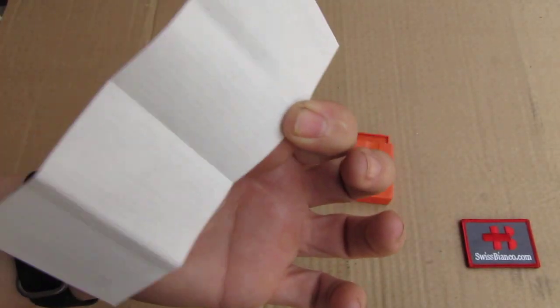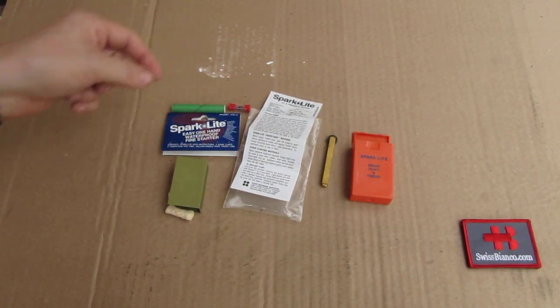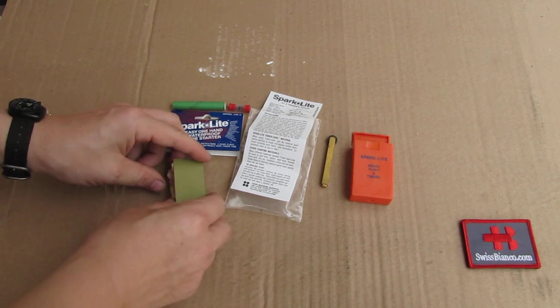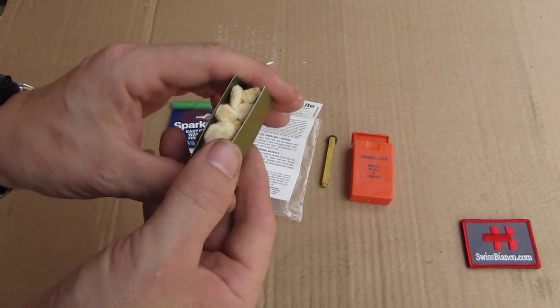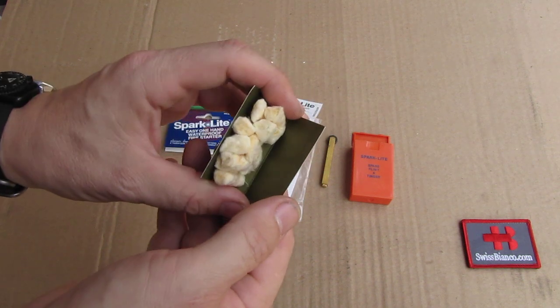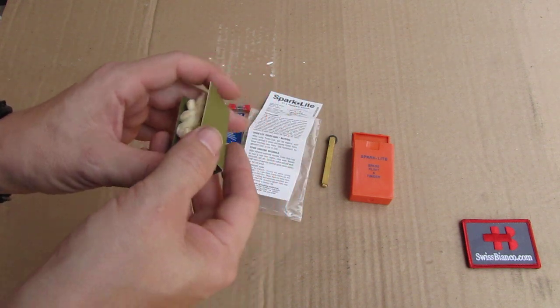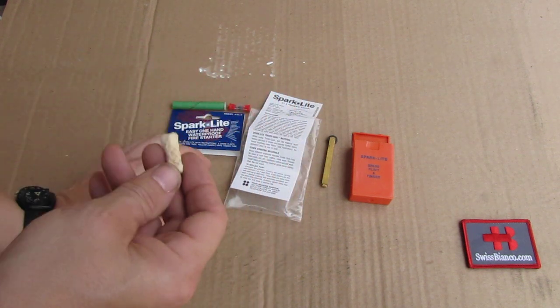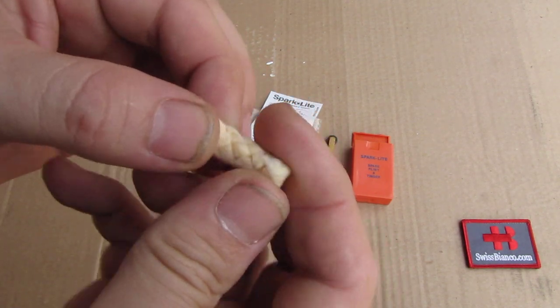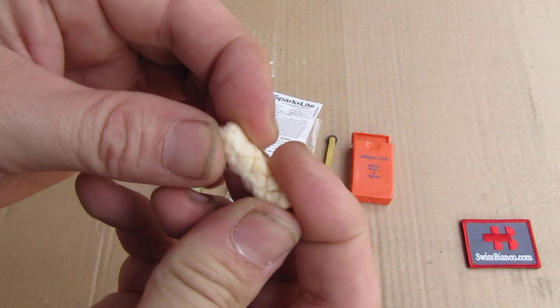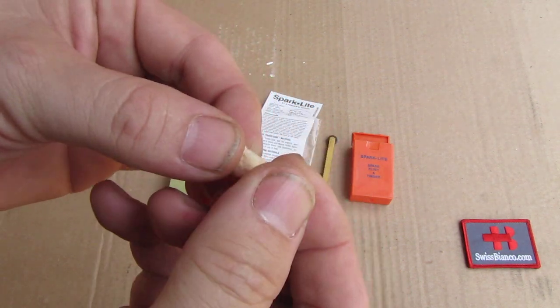So worst case, you can use that as tinder as well. Then we have some of the tinders. Quite many in that compartment, so that lasts you a while. Now the item is basically waxed cotton string or small rope or what that would be.